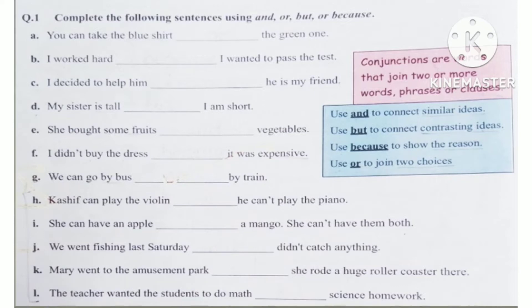Use AND to connect similar ideas. Use BUT to connect contrasting or different ideas. Use BECAUSE to show the reason, and use OR to join two choices or options.